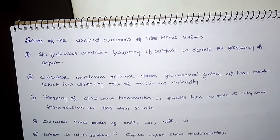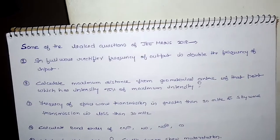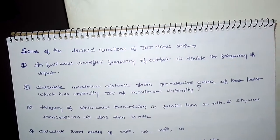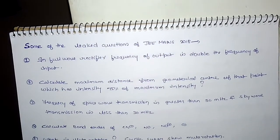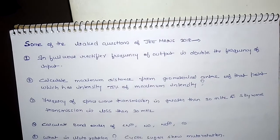Second, calculate the maximum distance from geometrical center of that point which has intensity 75% of maximum intensity.